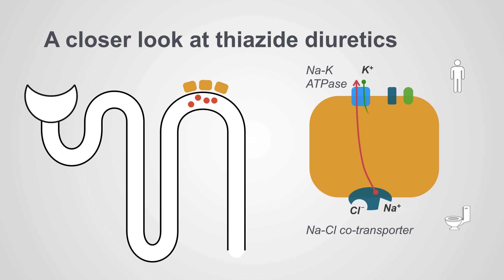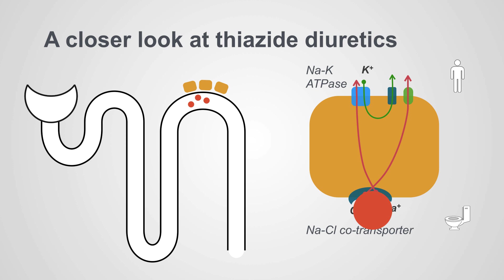That exchange occurs with potassium, and potassium is recycled through a potassium channel. Chloride is reabsorbed and then exits the cell via a basolateral chloride transporter. Thiazides act by blocking the sodium chloride cotransporter, which shuts down all the movement of these molecules.